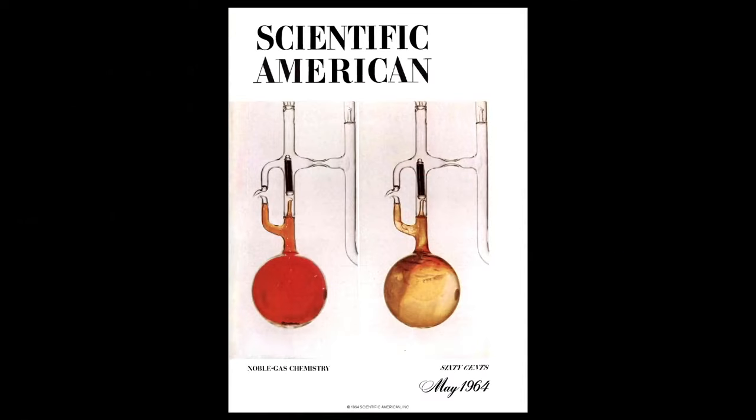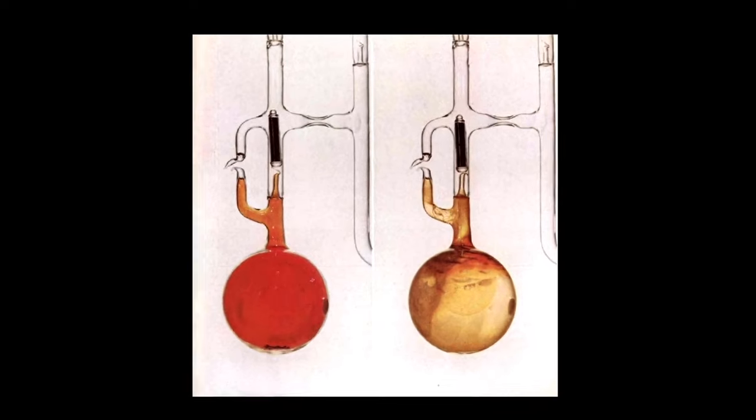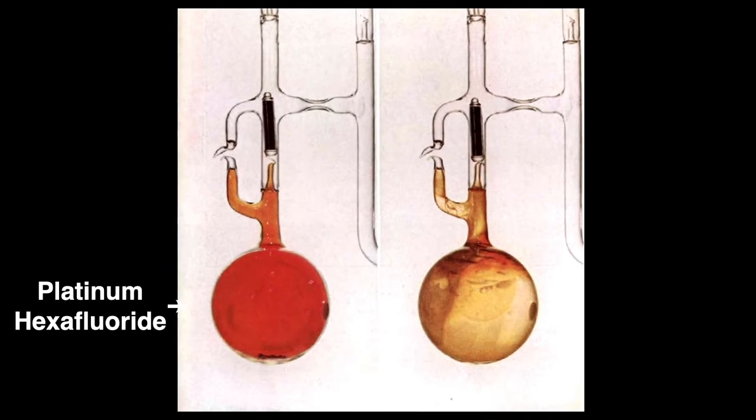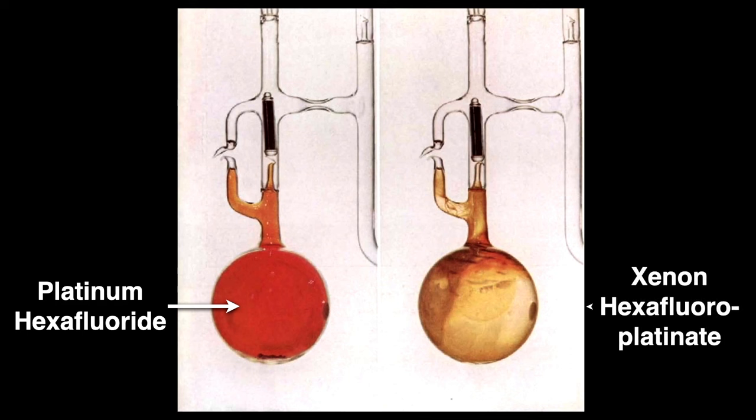The cover article of this May 1964 issue of Scientific American shows the reddish precursor platinum hexafluoroplatinate gas. This gas is such a powerful oxidizer, it can oxidize oxygen. Neil Bartlett hypothesized that it could also react with xenon, and indeed, you can see the resulting yellowish xenon hexafluoroplatinate compound after the addition of xenon. This was big news.